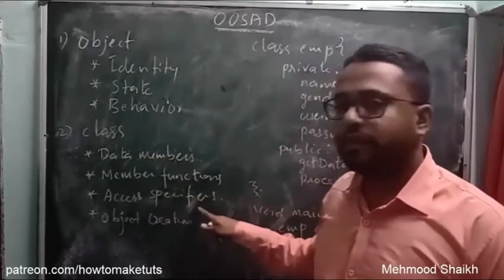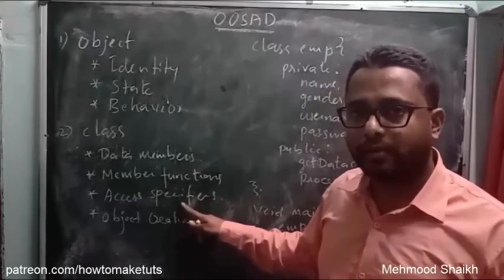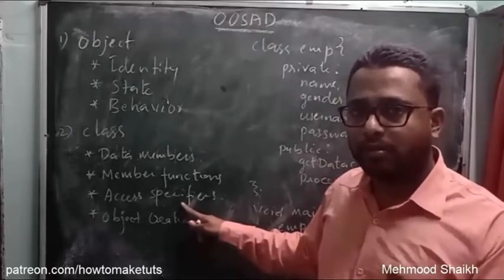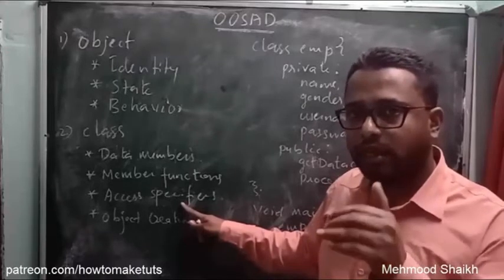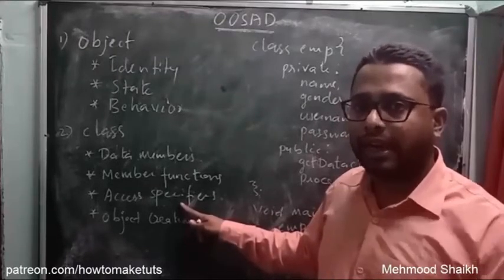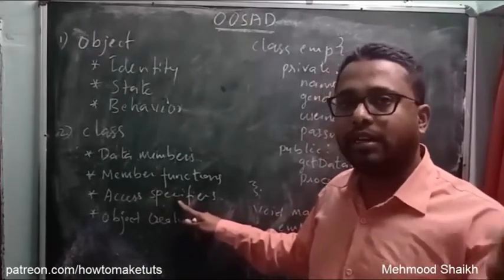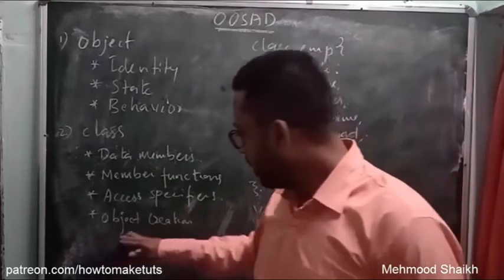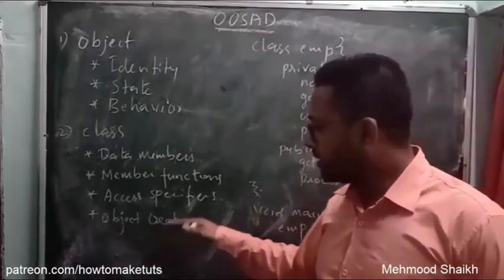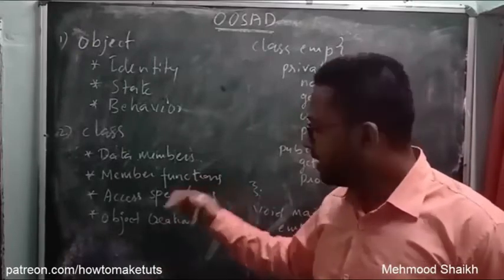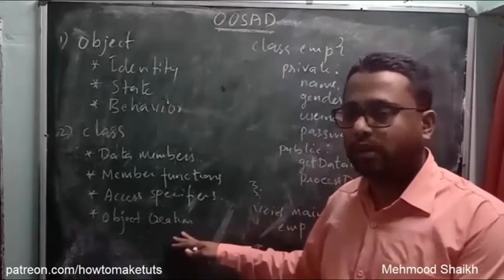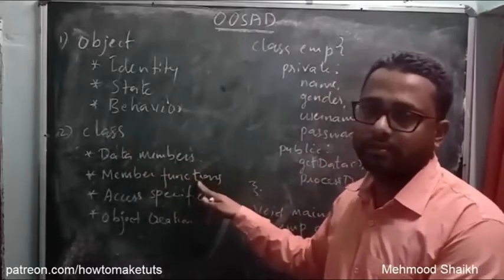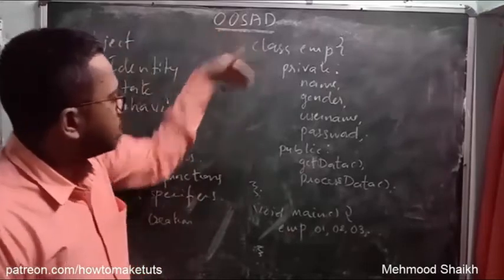A class can hold various types of data. A class can hold private data, public data, and protected data. Based on the permission allowed by the user, the data can be kept inside public, protected, and private access specifiers — those three are the access specifiers used inside the class. Once we declare the class we have to create the object of that class, and with that object we can easily access the data members using the member functions. Now we will discuss the structure of a class — how we can declare a class.